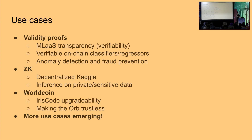I work at WorldCoin, building a privacy-preserving proof of personhood protocol using an iris scanner device called the orb. We create a unique identifier by running a machine learning model. If we ever update the machine learning model, people currently have to go back to the hardware device to get onboarded again. With zero-knowledge machine learning, you'd be able to create a proof on their phone that they correctly created this identifier without going to the physical device again. We could also make the device trustless — proving that all algorithms are running correctly and checks against firmware or sensor tampering, so you cannot attack the system.